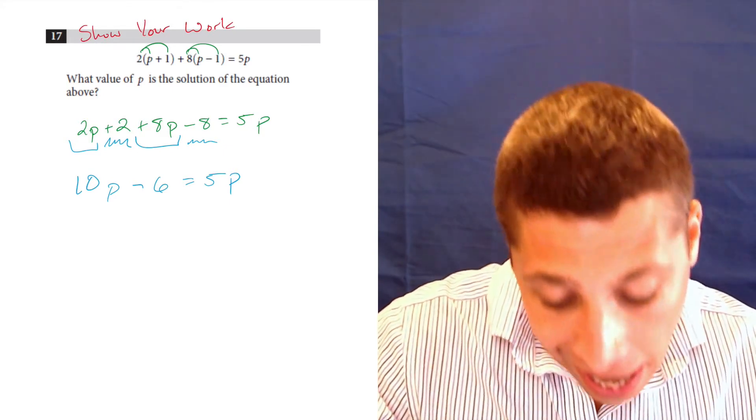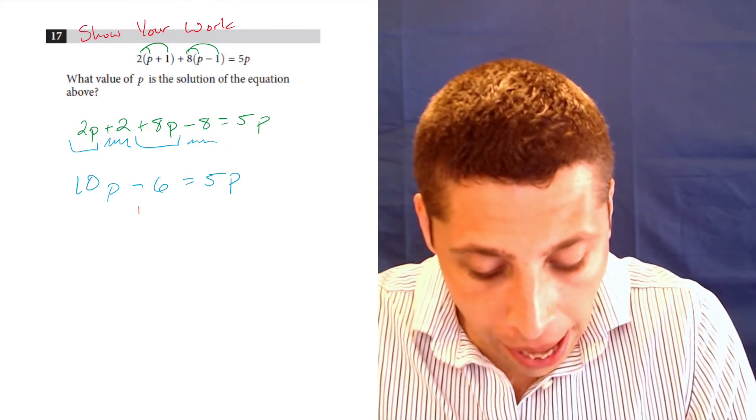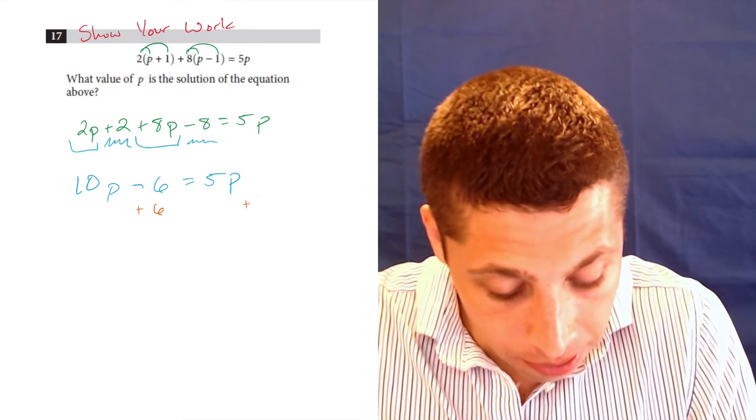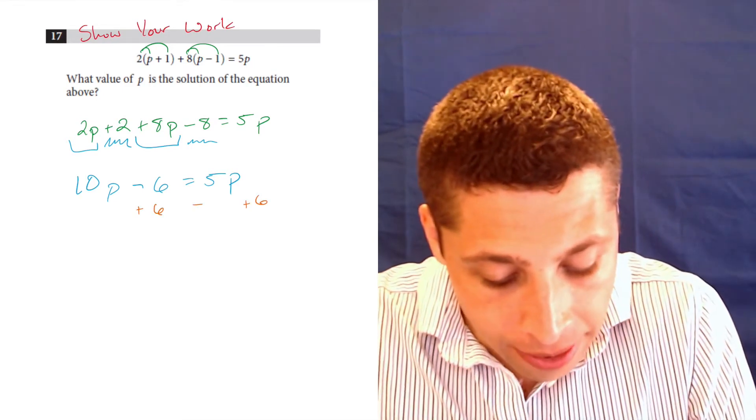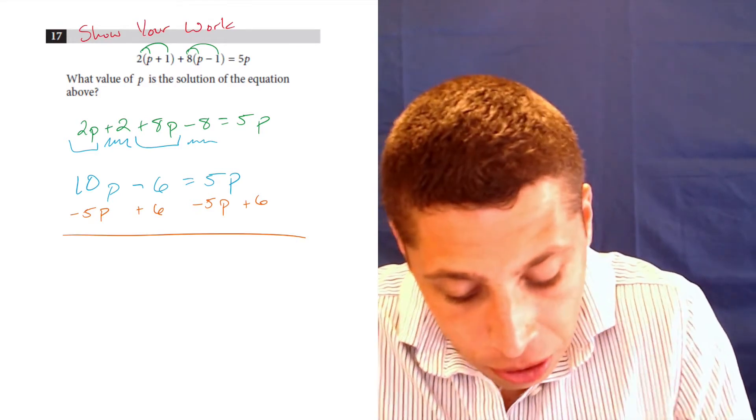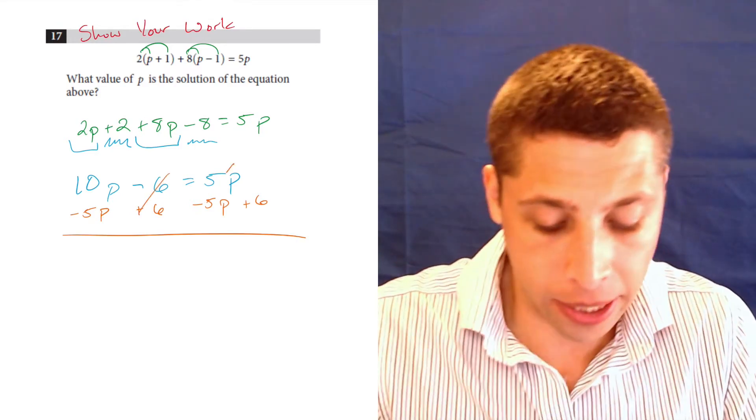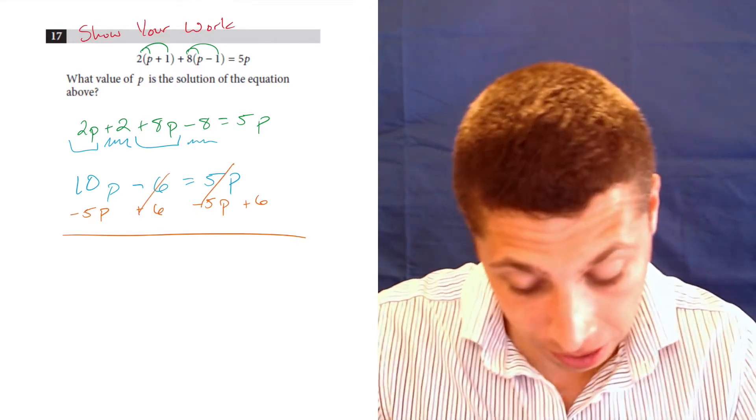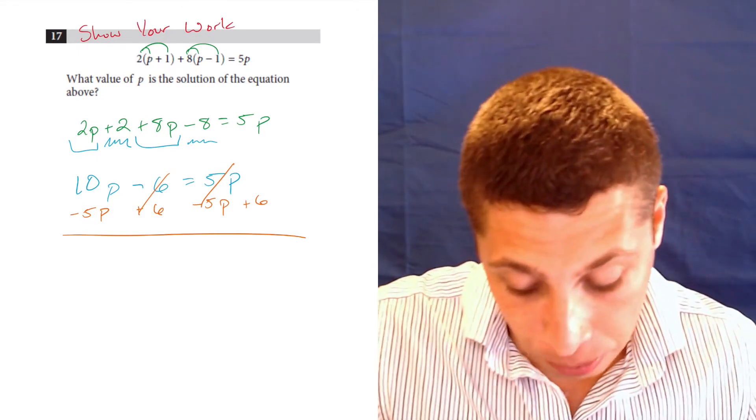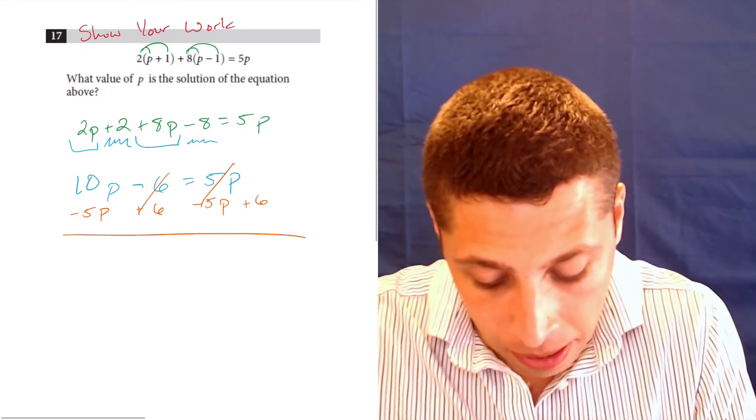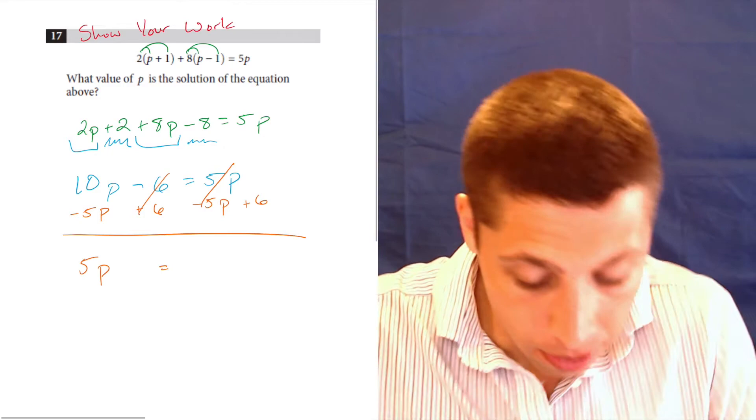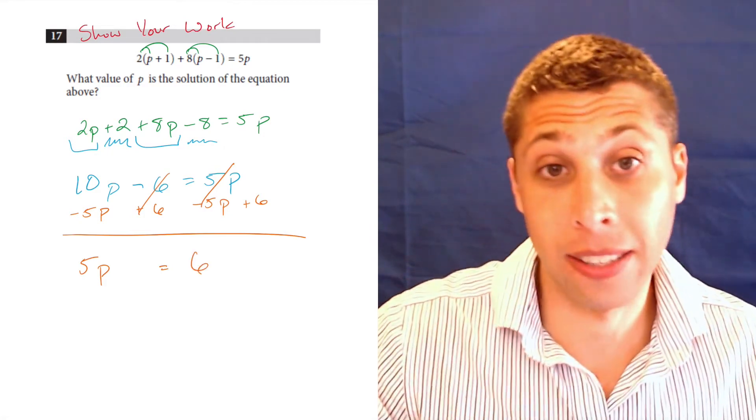So what would I do now? Well, now I might add the 6 to both sides and subtract the 5p, right? So there's lots of ways to do it, but I'm going to get rid of two things. I can do this at once because it's really the same step. So 10p minus 5p gets me 5p, the 6 is cancelled, and now we have 6 on this side.